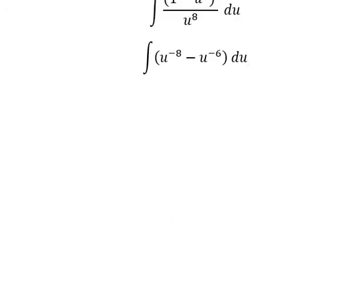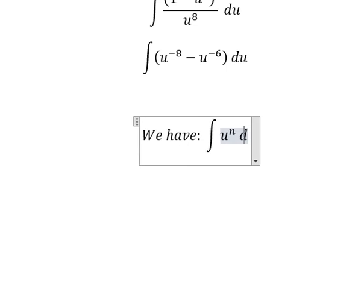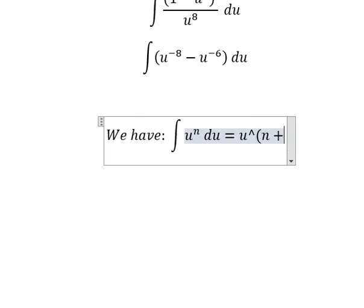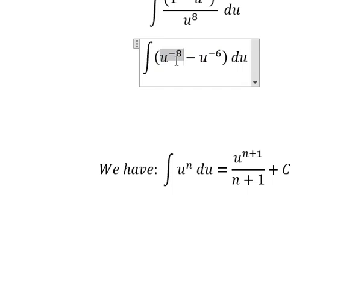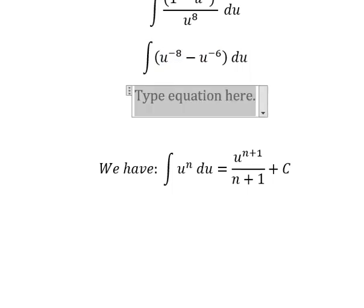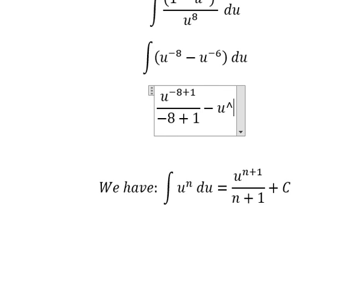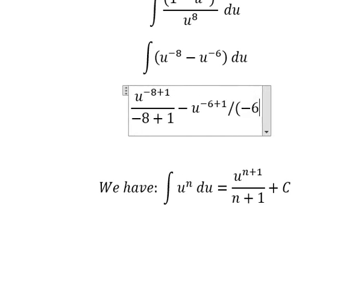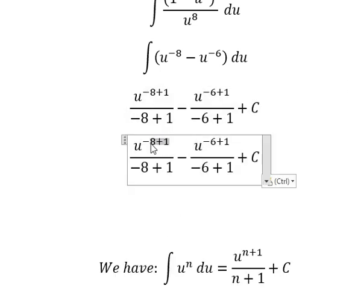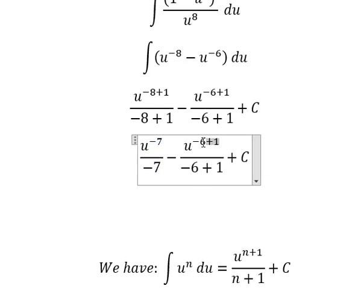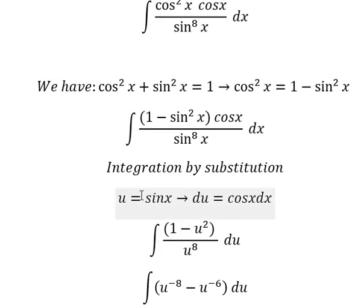Now we have the formula: the integral of u to the power of n du equals u to the power of n plus 1 over n plus 1, plus C. So the integral of u to the power of negative 8 gives u to the power of negative 7 over negative 7, and similarly for the power of negative 6 we get negative 5 over negative 5. Then we substitute u back to sine x.